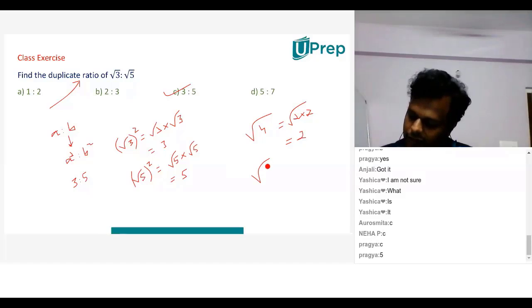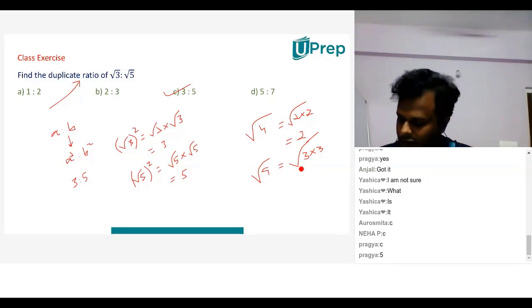Similarly, if I have a root nine. I can write nine as three into three. I mean, root will be there here. The root of. So that means what since square root is there only one three will come out. So that means what root of nine is three.